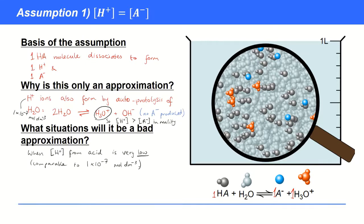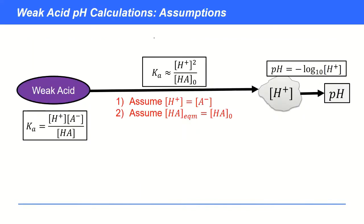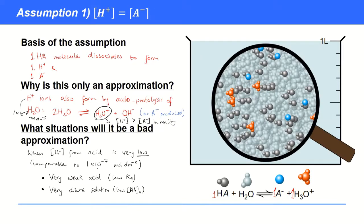So water is dissociating to give us around about 1 times 10 to the minus 7 moles per decimeter cubed of H+ ions at 25 degrees C. So which situations will be a bad approximation? It's when the concentration of H+ from the acid is very low, comparable to 1 times 10 to the minus 7 moles per decimeter cubed. Perhaps one order of magnitude bigger, 1 times 10 to the minus 6 or something like that. So it's going to be situations where you have a very weak acid, or a very dilute solution. Remember from this formula here that the H+ concentration is equal to the square root of Ka times the initial acid concentration. So whenever these values are low, you're going to end up with a low value of the H+ concentration. And once you start to get down towards this limit of about 1 times 10 to the minus 7 moles per decimeter cubed, then this imbalance is going to really be felt.